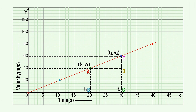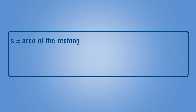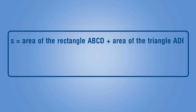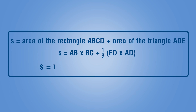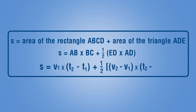The distance traveled by an object is given by the product of velocity and time. Hence, for a given time interval, the area under the velocity-time graph gives the distance moved by the object in that time interval. s is equal to the area of rectangle ABCD plus the area of triangle ADE, which equals AB multiplied by BC plus one-half ED multiplied by AD, giving s equal to v1 multiplied by (t2 minus t1) plus one-half (v2 minus v1) multiplied by (t2 minus t1).